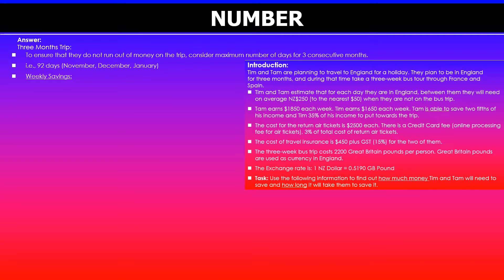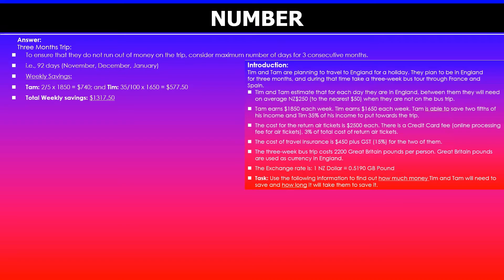We are also given weekly savings. Tim is able to save two-fifths of his income, and two-fifths of $1,850 is $740 — that's a fraction of a quantity. Likewise, Tam is able to save 35% of her earnings. So it is 35 over 100 times $1,650, which gives $577.50. We can use this information to find the total weekly savings for both of them — $740 plus $577.50 gives $1,317.50. So this is the weekly savings.